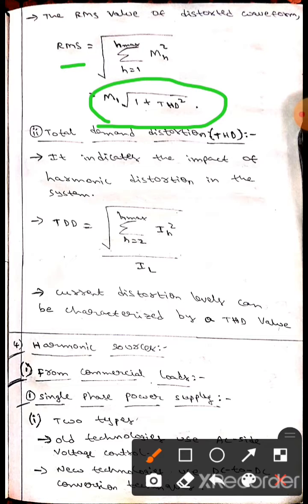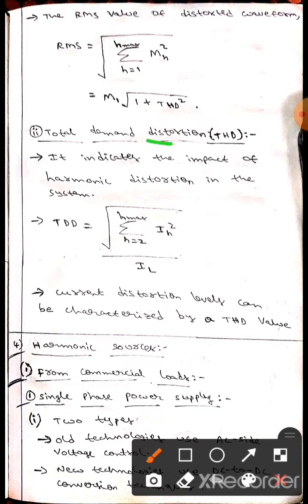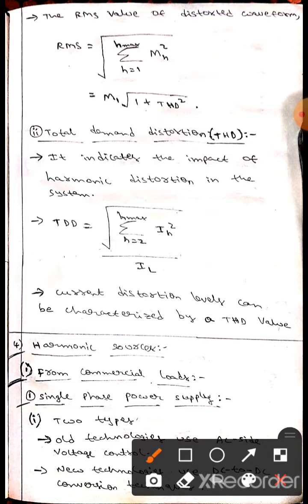The next one is total demand distortion, TDD. I wrote a spelling mistake here. TDD indicates the impact of harmonic distortion in a system.